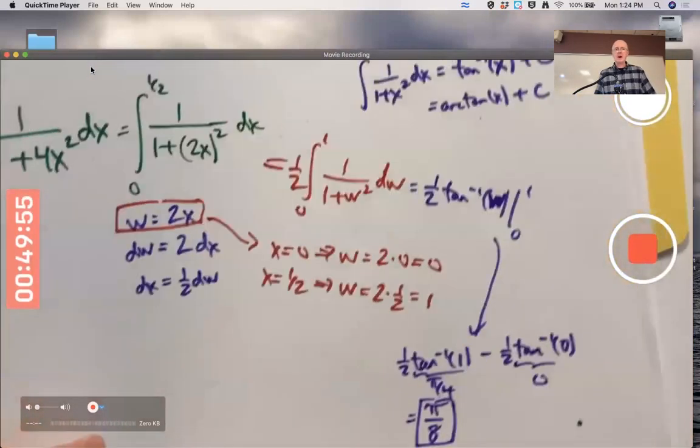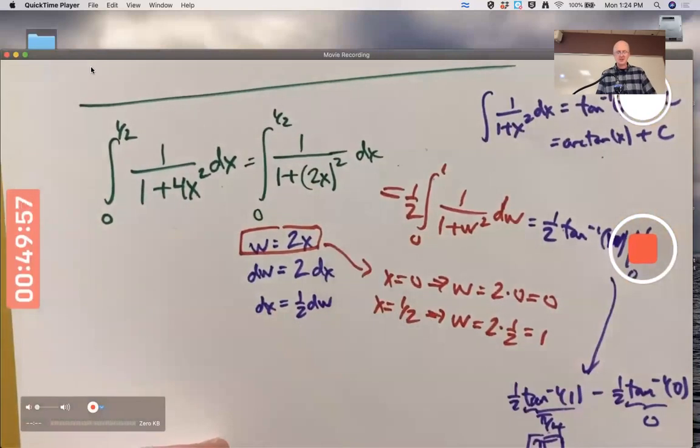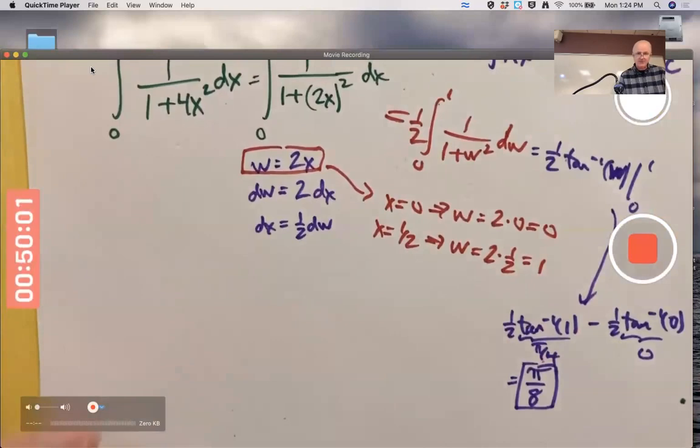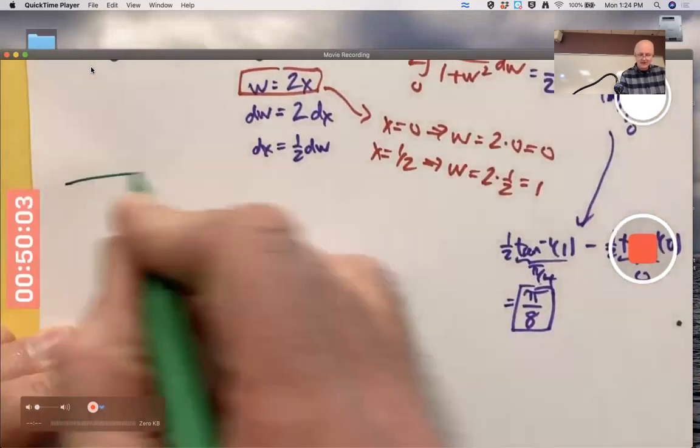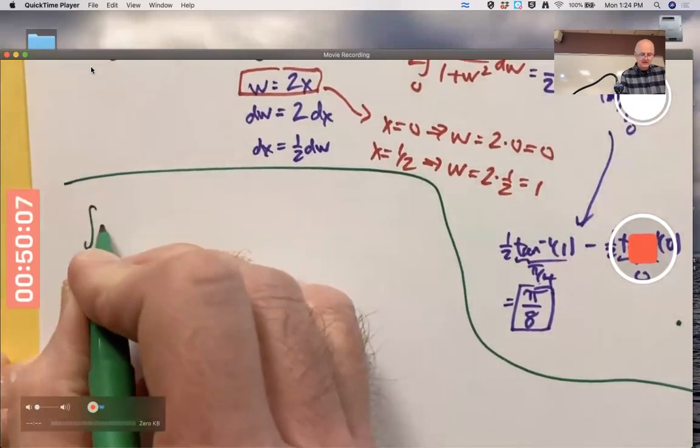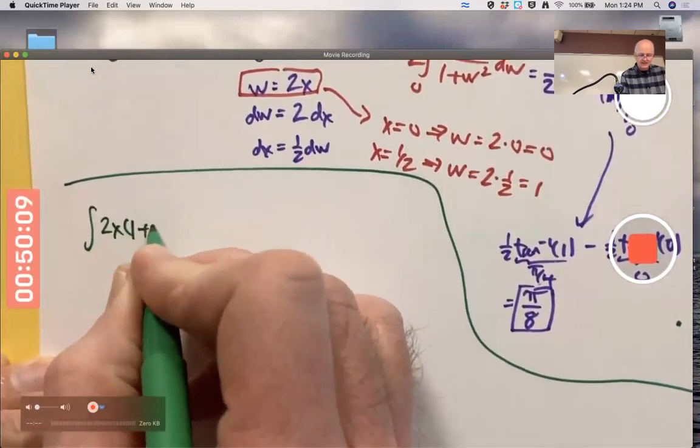So change the limits of integration when you go to the new variable and do not change back. Let's do an example where both limits of integration change. The 0 did not change here, but plenty of other examples where it does change.